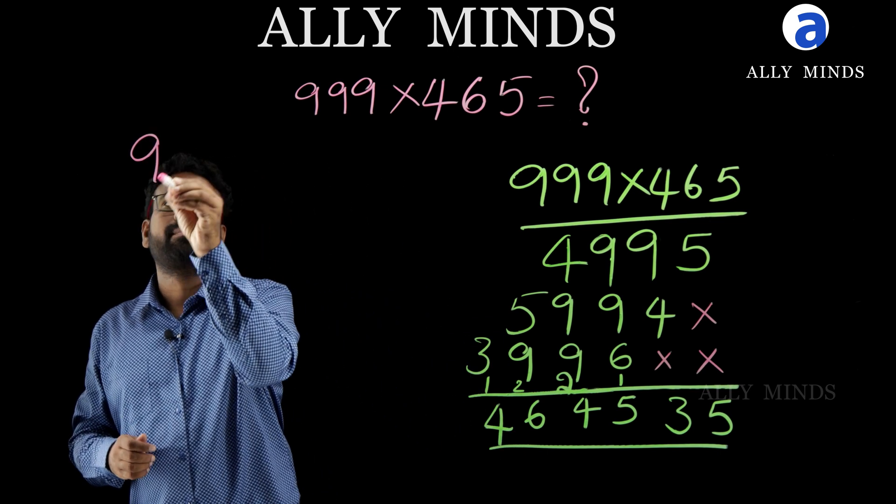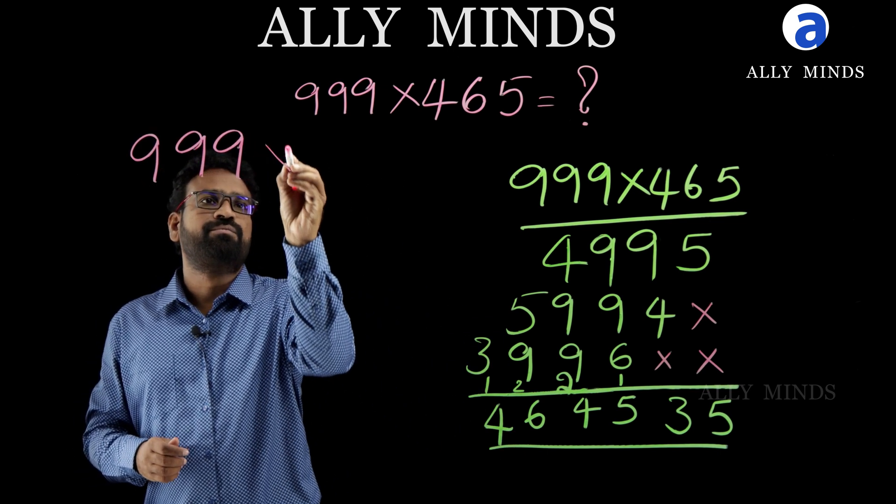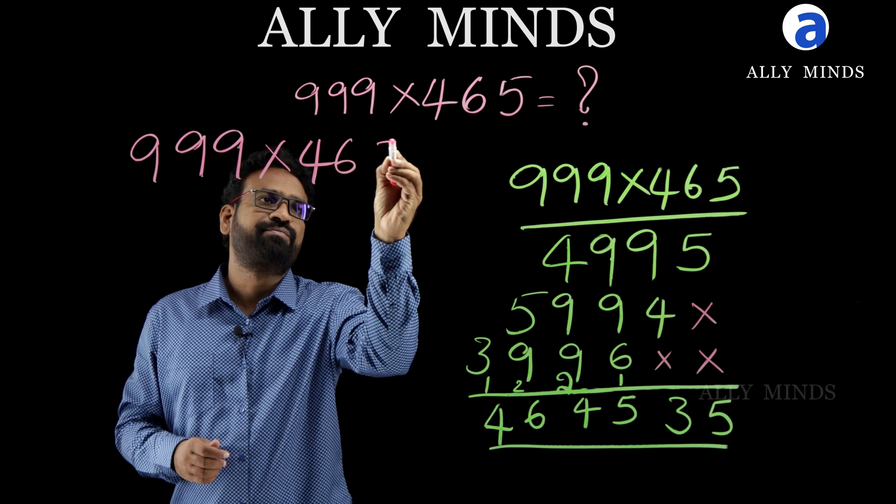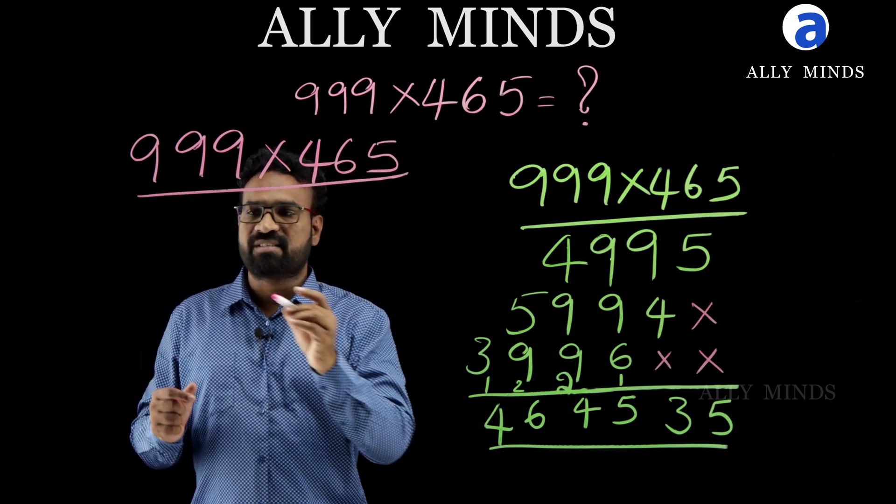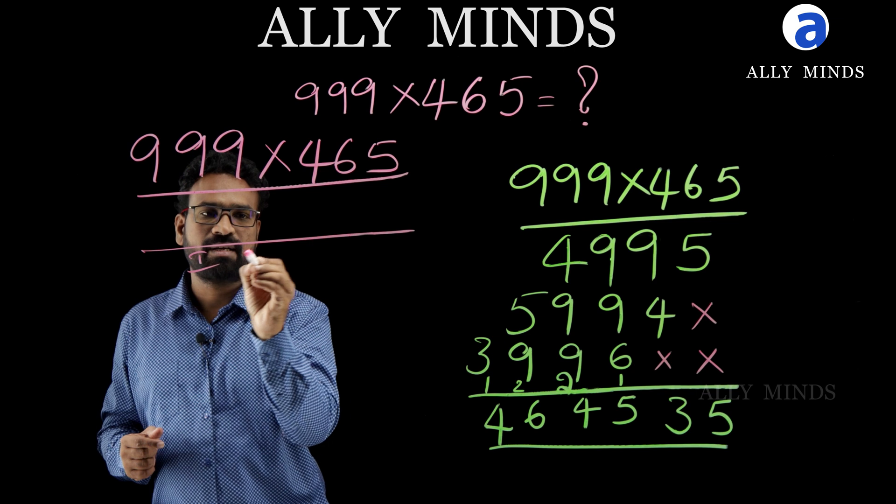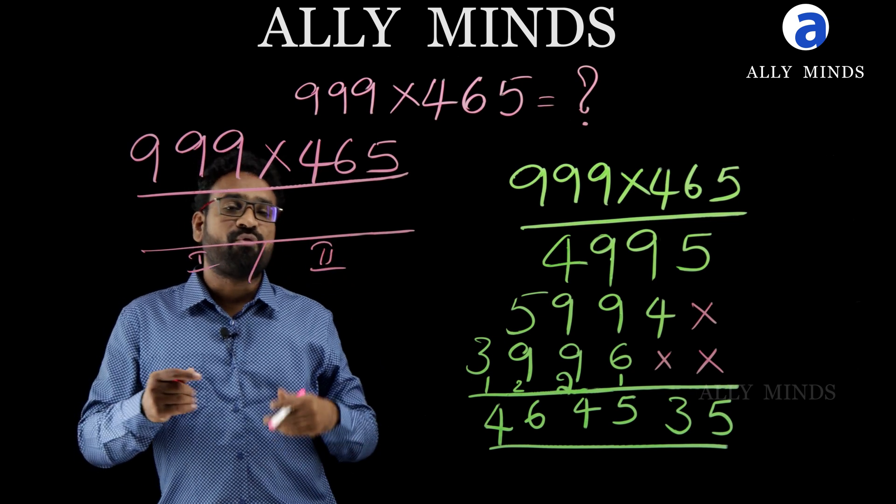Here the question is, triple nine into four six five. We get this answer in two parts, first part and second part. Now, for first part, what we have to do is...